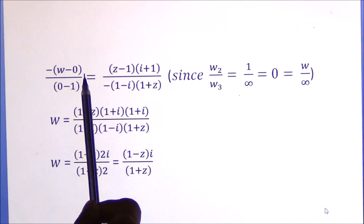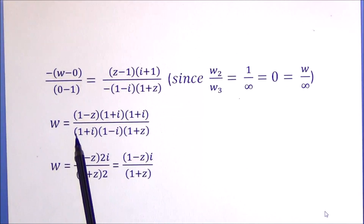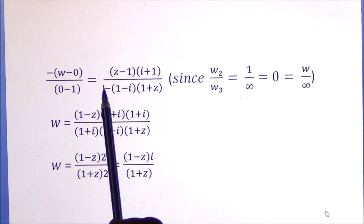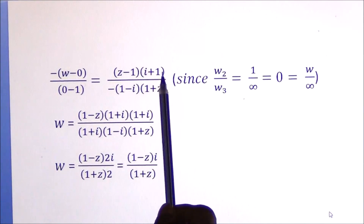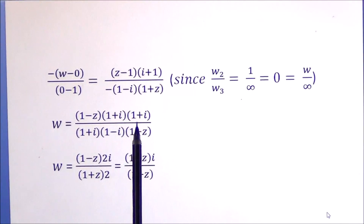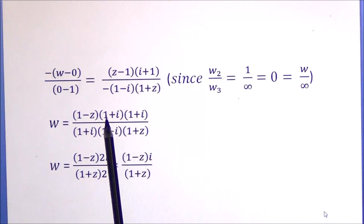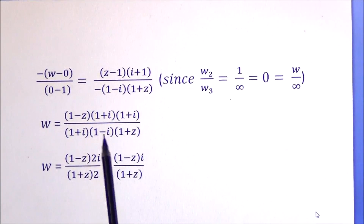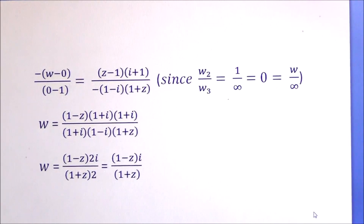After substitution, we get: -(W - 0) / (0 - 1) = (Z - 1)(i + 1) / [-(1 - i)(1 + Z)]. Therefore W = (1 - Z)(1 + i) / [(1 - i)(1 + Z)]. Multiplying numerator and denominator by the conjugate (1 + i) of the denominator factor (1 - i), we get 1 - i² = 2 in the denominator. Cancelling 2, the required bilinear transformation is W = i(1 - Z) / (1 + Z).